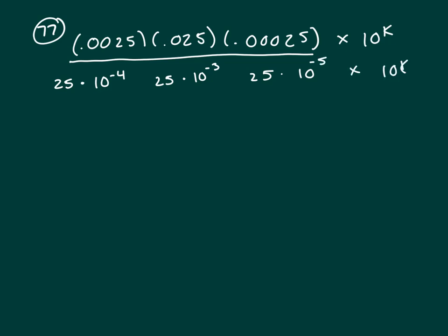And we're trying to figure out what k is. So we've got 25 cubed. And then we've got 10 to the... when you multiply like bases, you add your exponents.